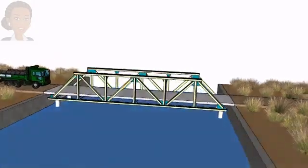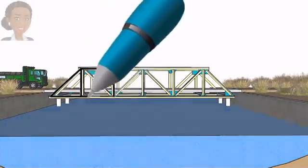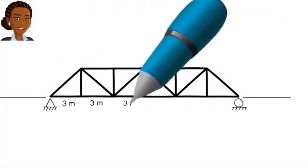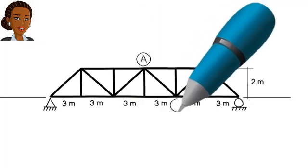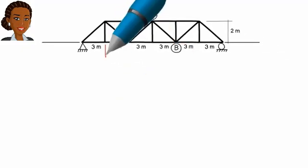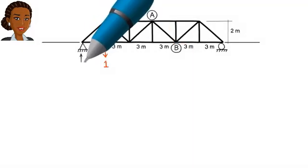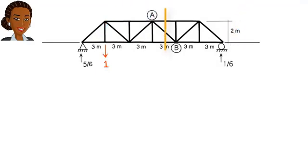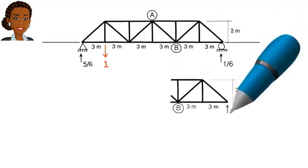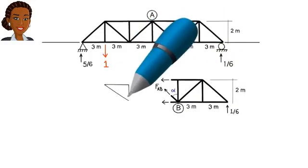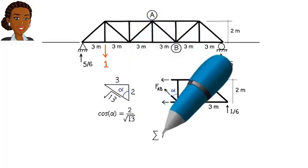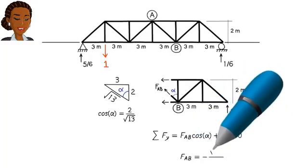Let's draw the influence line for one of the truss members, say, for member AB. To do so, we start by placing a unit load at this joint and calculate the support reactions. Then we cut the truss through member AB, draw the free body diagram for the right segment of the structure, and sum the forces in the y direction in order to determine the axial force in AB.